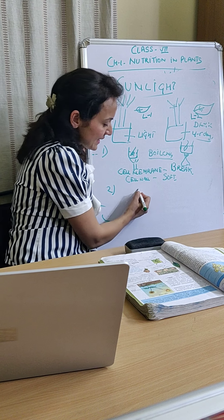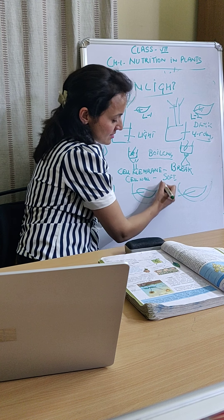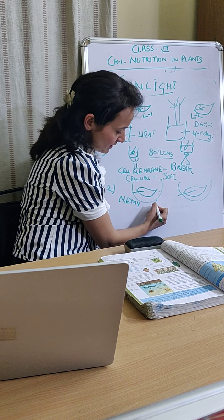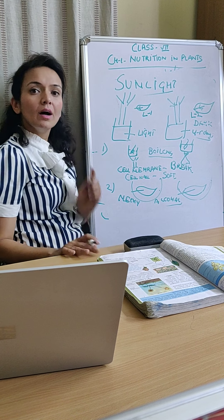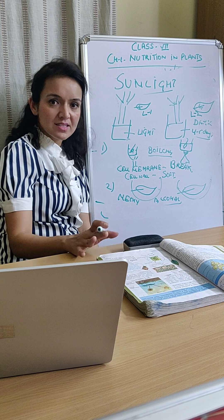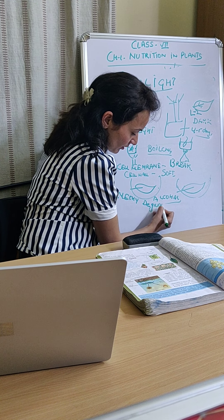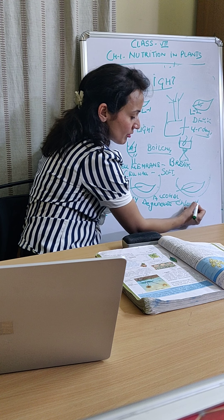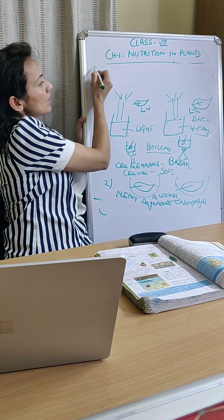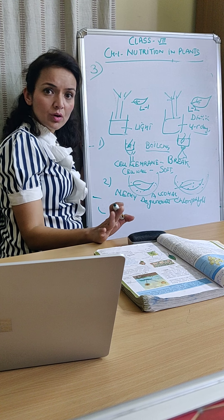Step 2: I will take both leaves and put them in a solution called methyl alcohol. The function of methyl alcohol is to destroy the chlorophyll - whatever chlorophyll is present in the leaf, methyl alcohol will completely degenerate it. So at this point the chlorophyll has been destroyed from both leaves.